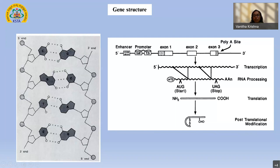Then comes the transcription process in which RNA polymerase plays a very important role. It is correctly positioned close to the coding region with the help of the promoter, especially the TATA box. The enhancer is also another region ensuring the tight regulation of this transcription. After that, the information — the AGCT — will be converted into codons, which are the building units of the RNA molecules. These codons will be converted into amino acids, which are seen in the case of proteins.